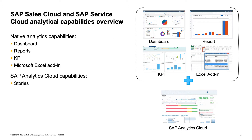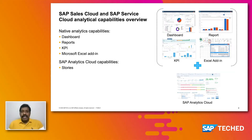The first interface is the dashboard. This is a place where we can get all business information in one place, having multiple tiles, each representing one particular report. We can define interactivity between the tiles — for example, when I select a particular value in a tile, the other tiles can be filtered based on that value. We also have a drill-down option to slice and dice the data, as well as navigation options to reports and other objects of SAP Sales and Service Cloud.